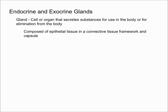In this video, I'm going to talk about what endocrine and exocrine glands are. Let's first start off by defining what a gland is. By definition, a gland is a cell or an organ that secretes substances for use in the body or for elimination from the body. Anatomically, it's composed of epithelial tissue in a connective tissue framework and capsule — that will make more sense once you see a picture of it.